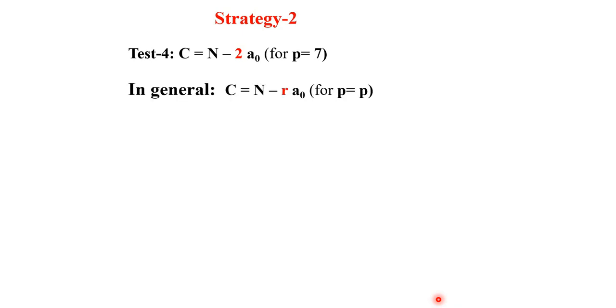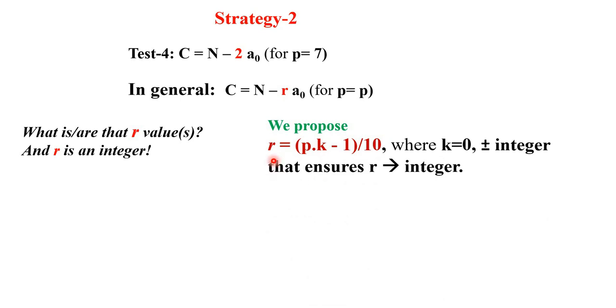This is for p equal to 7, a specific one, but in general we can say that C is N minus ra₀, where r is 2 for p equal to 7. Otherwise, for p equal to p it is r. So the question goes down to what is or are those r values and of course r is an integer. So our prescription we propose that r equals p k minus 1 whole divided by 10. But p is the given prime and k is 0 or plus minus integer. That ensures that r is an integer, which is 2 in this case for p.